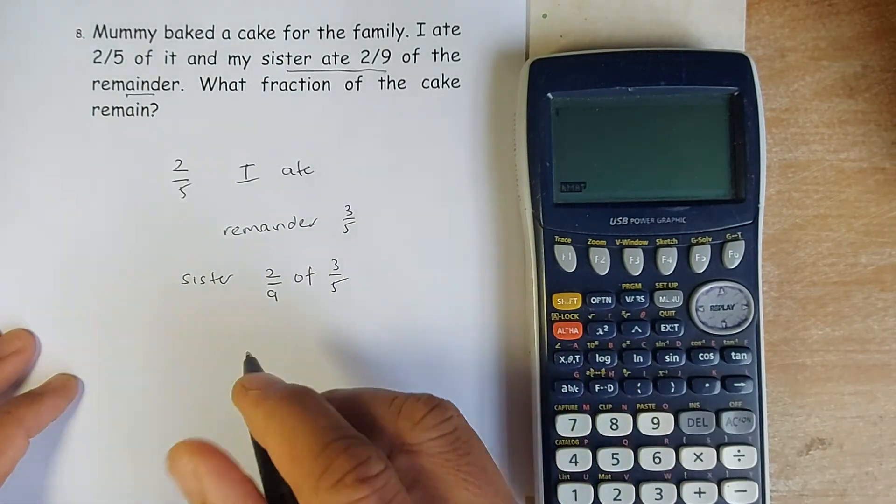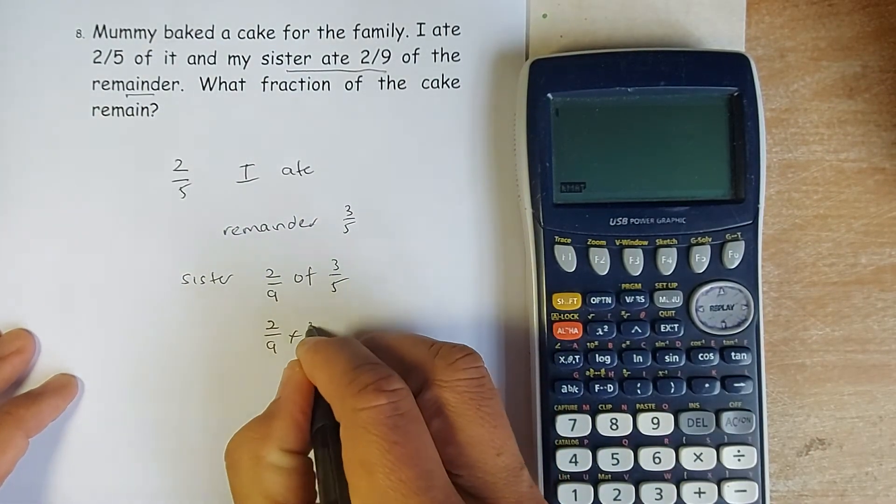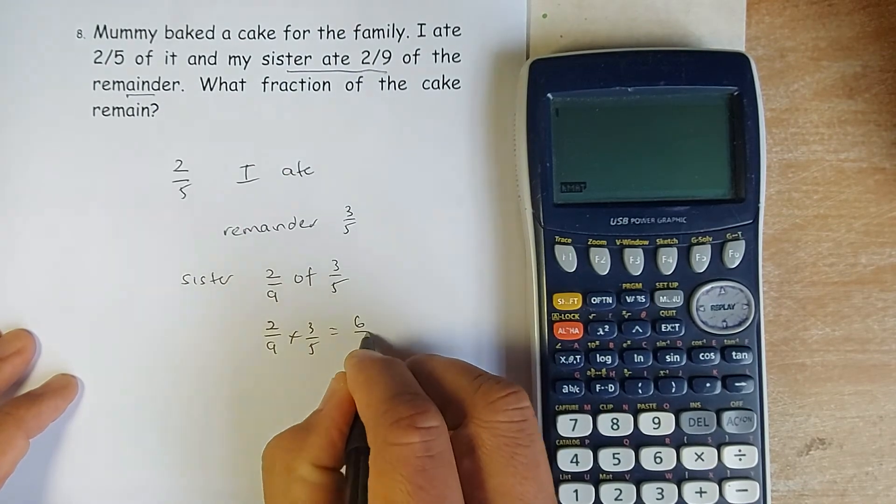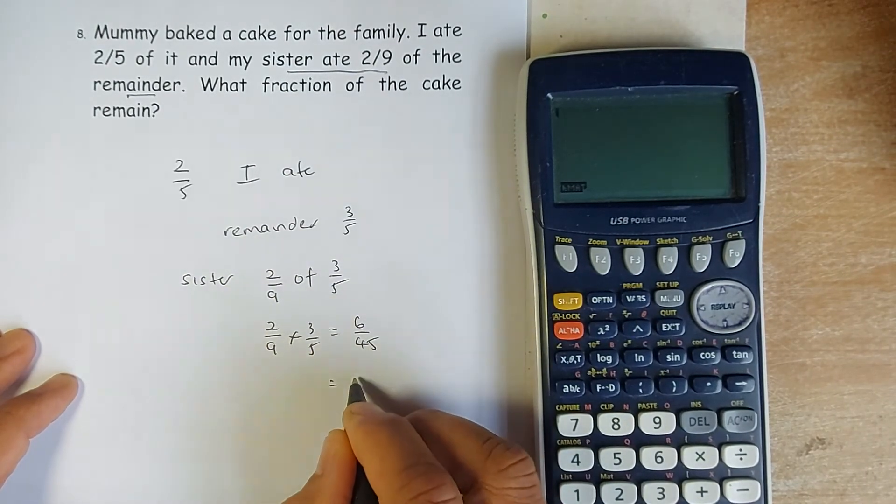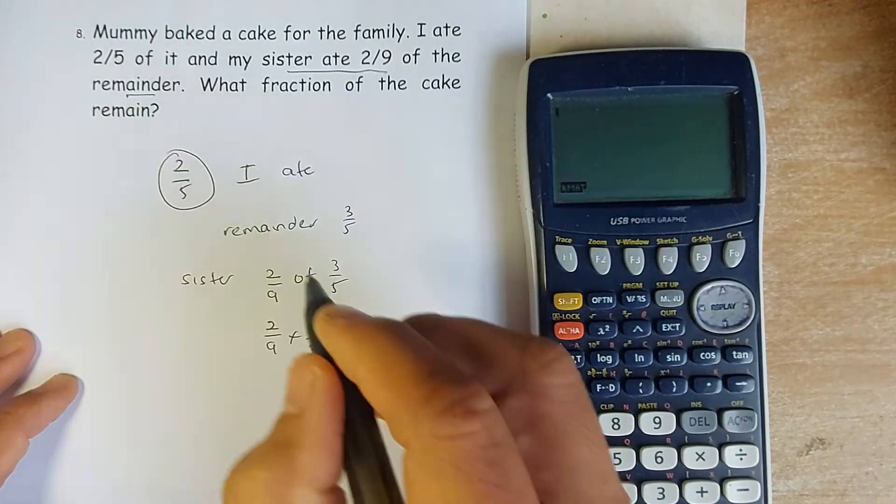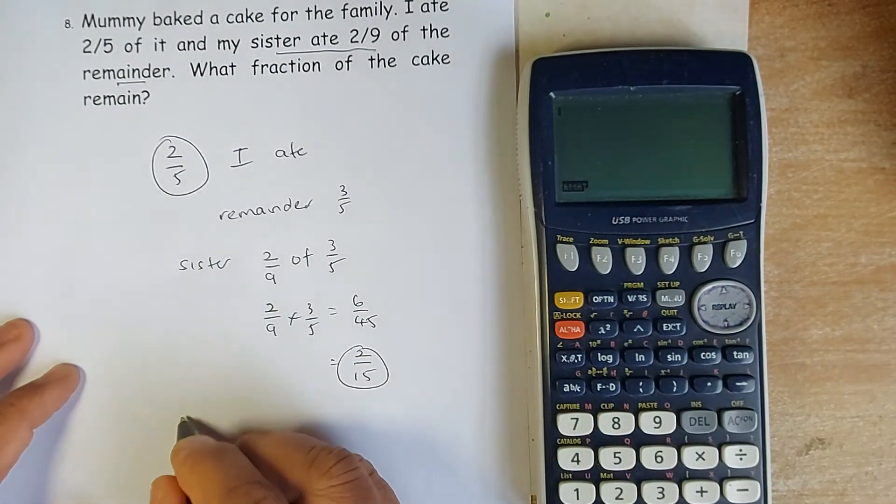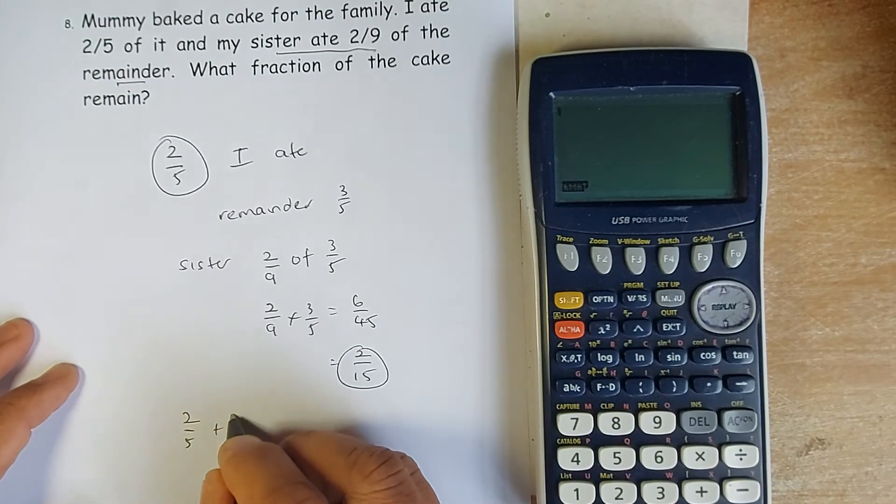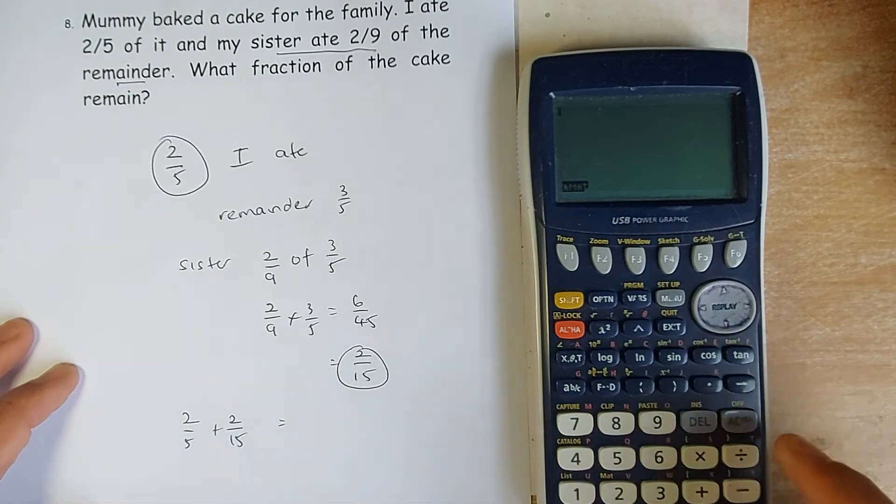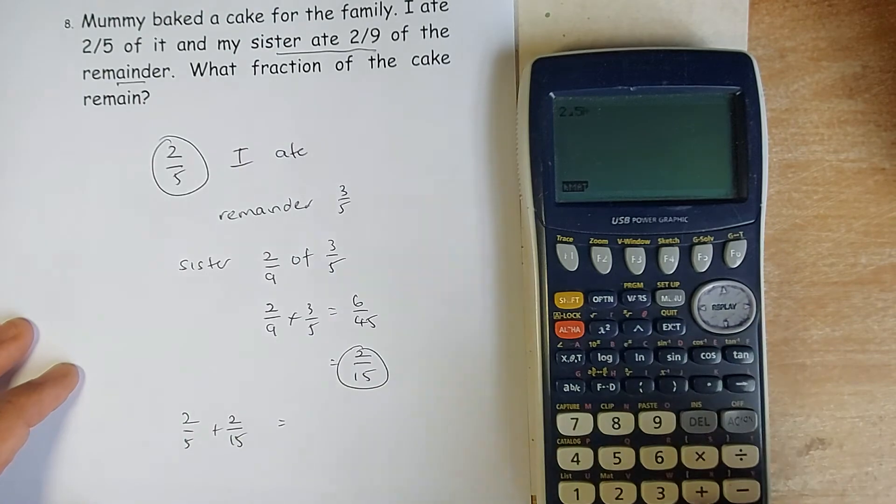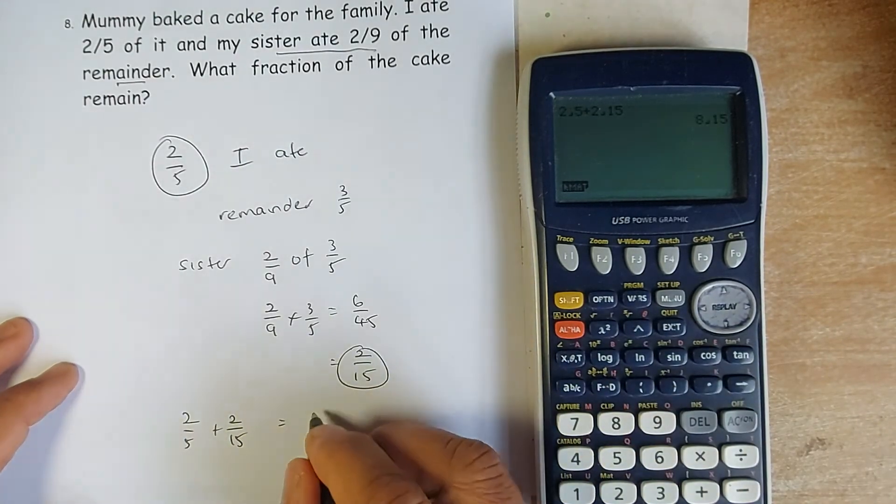2/9 times 3 fifths is going to be 6 over 45, or simplify them with 2 over 15. So I ate 2 fifths, my sister ate 2/15. So together we have eaten 2 fifths plus 2/15. Put in your calculator. So 2 fifths plus 2 over 15 is going to be 8 over 15. So both of us ate 8 over 15.